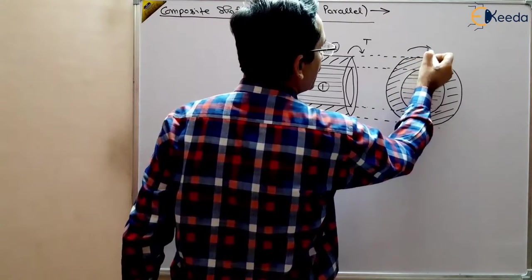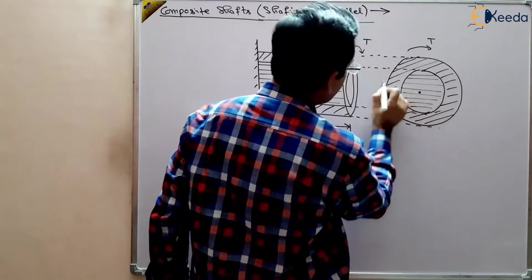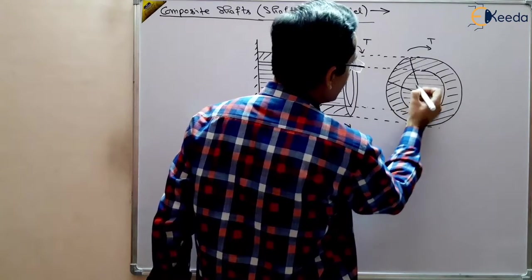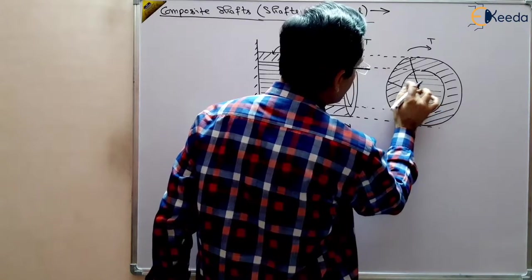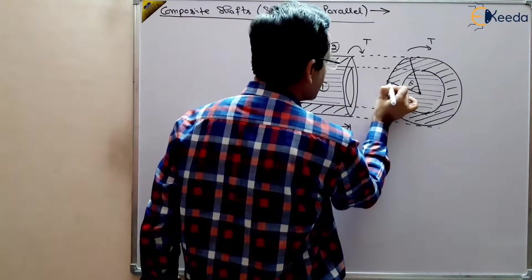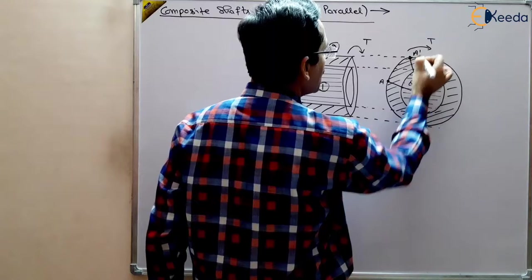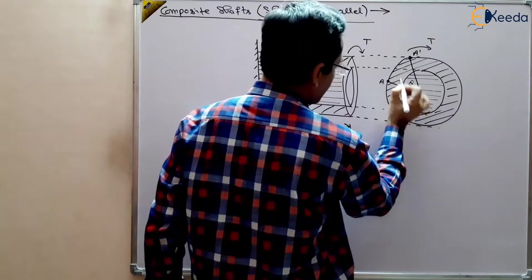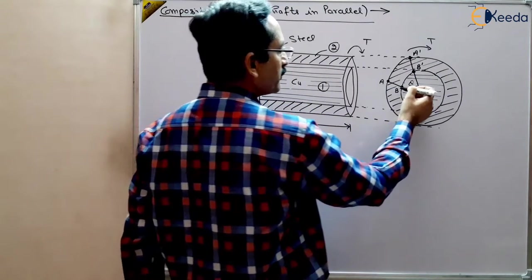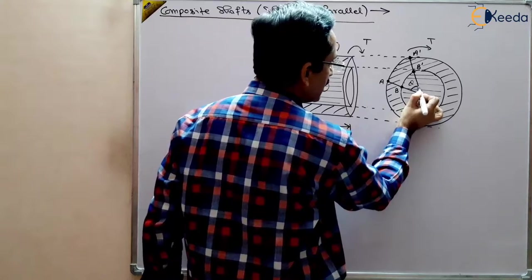A torque T is applied — how do we analyze this problem? The angle of twist is theta. The upper part of the outer shaft moves from A to A-dash, and the upper part of the inner shaft moves from B to B-dash. The angle of twist is theta and this is our center.